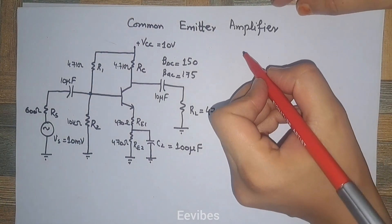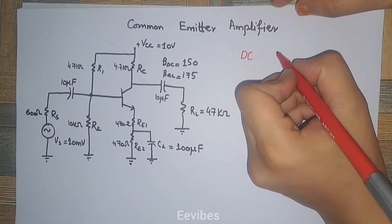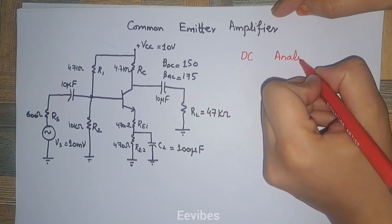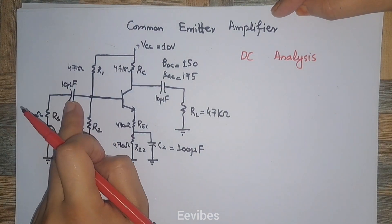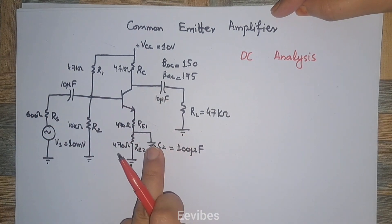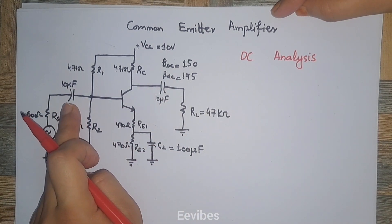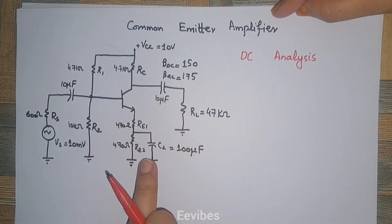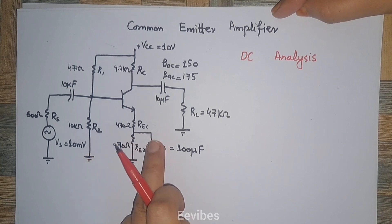Starting with the DC analysis: as many capacitors are present in this amplifier — such as the capacitor on the input side, the capacitor on the output side, and the capacitor at the emitter terminal — we need to account for all of them.